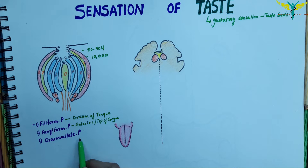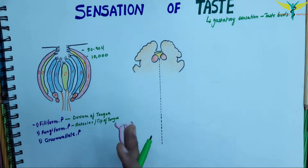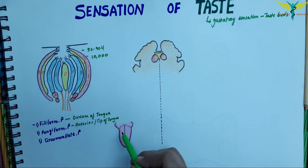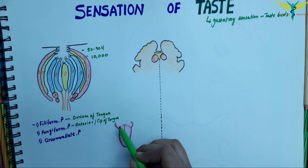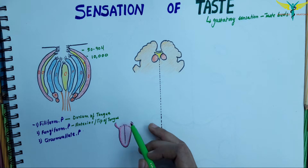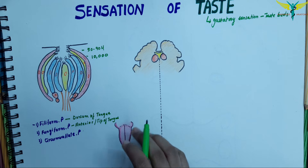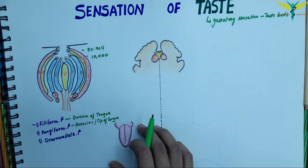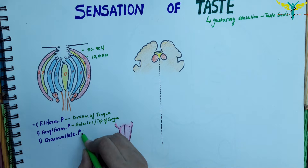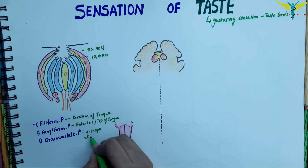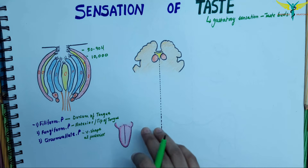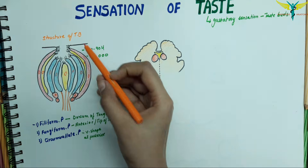Circumvallate papillae are large structures present on the posterior part of the tongue. They are arranged in a V-shape, and each papilla contains many taste buds — up to 100 taste buds per papilla.